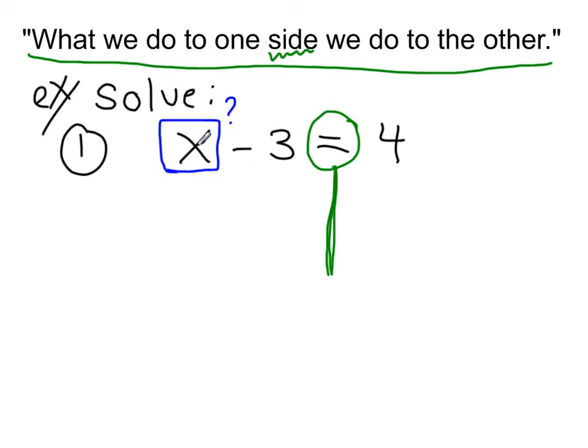So currently, we have x minus 3. I don't like that. So I'm going to undo the subtraction by adding 3. Now, addition principle says what we do to one side, so this is one side of the equation, we do to the other. I added 3 to this side. If I do that, then I have to add 3 to the other.